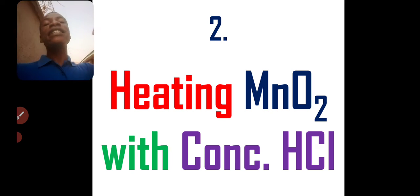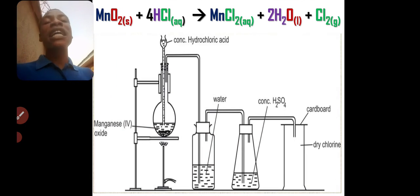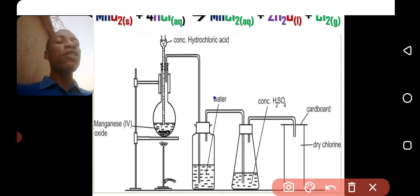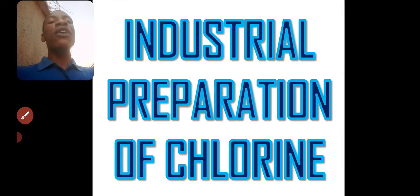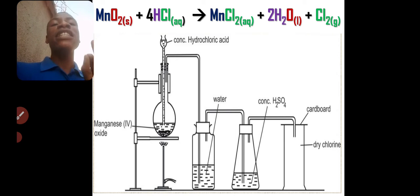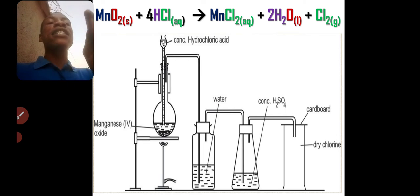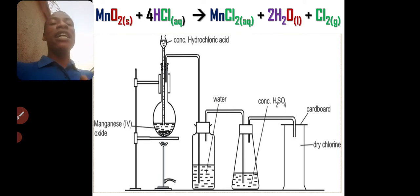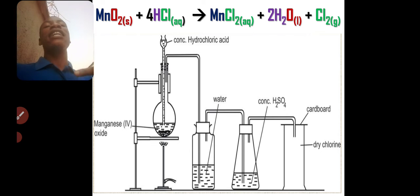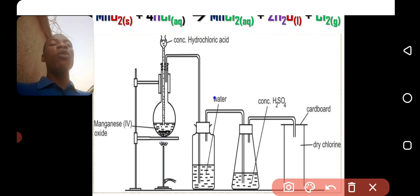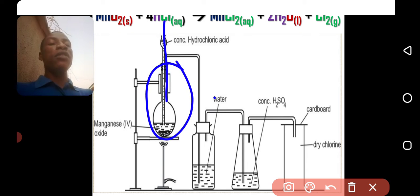The second method to produce chlorine gas in the laboratory is by heating MnO2 with concentrated HCl. The setup is essentially the same; the only difference is the reactants. Here MnO2 is used as the oxidizing agent — it is a solid compound, so we again need a round-bottom flask with a thistle funnel. They react to give MnCl2 + 2H2O + Cl2 gas. This reaction requires heating because MnO2 is not as strong an oxidizing agent as KMnO4.